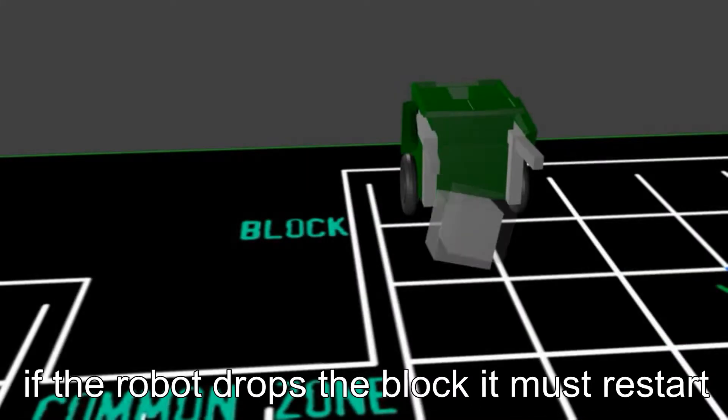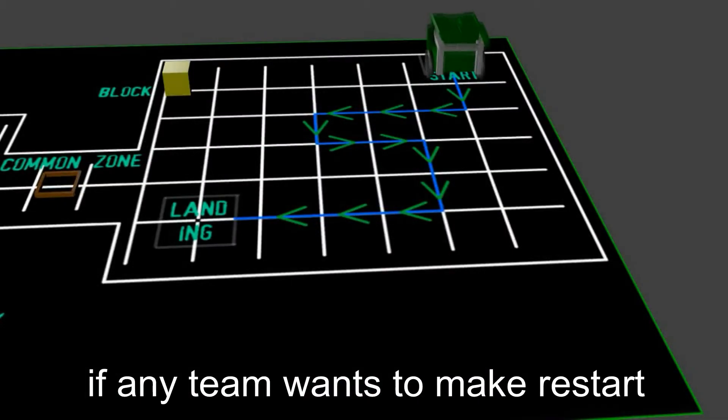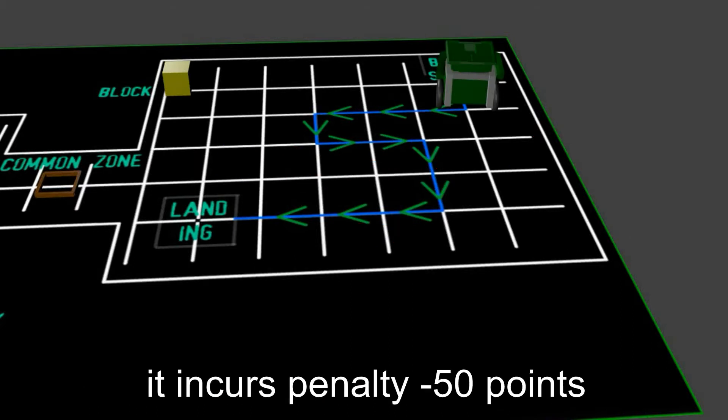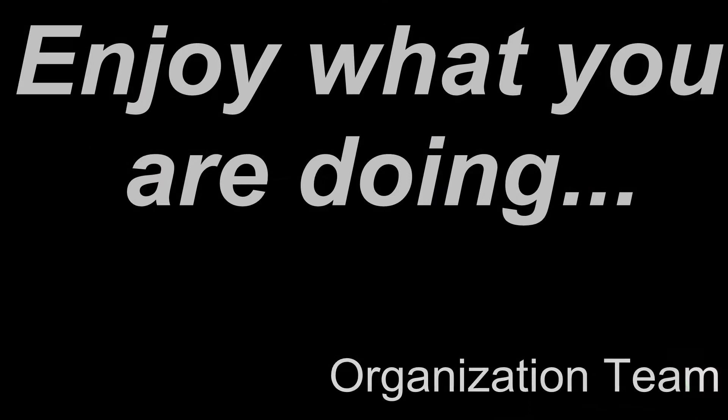If the robot drops the block, it must restart. If any team wants to make restart more than 3 times, it incurs penalty minus 50 points. Enjoy what you are doing, and thanks.